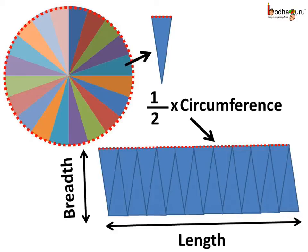So, the length of one side is equal to half the circumference of the circle. Correct?